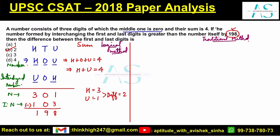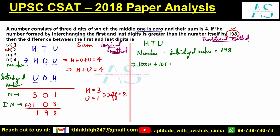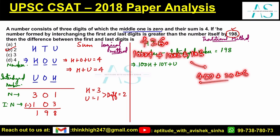Now for the traditional method. The number formation for a three-digit number H T U is: 100×H + 10×T + 1×U. For example, 426 equals 100×4 plus 10×2 plus 1×6, which is 400 plus 20 plus 6 equals 426. Using this, we set up: number minus interchanged number equals 198.